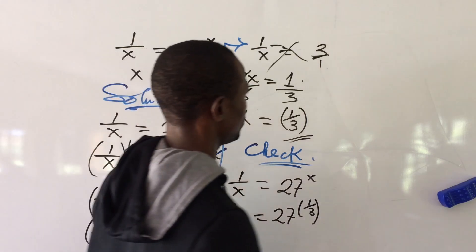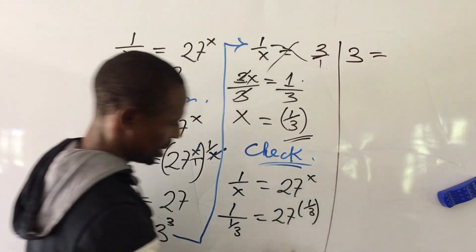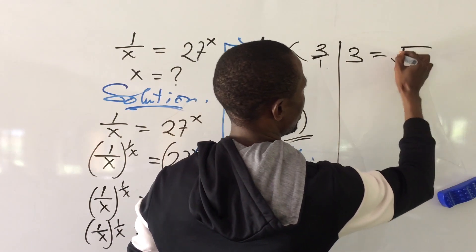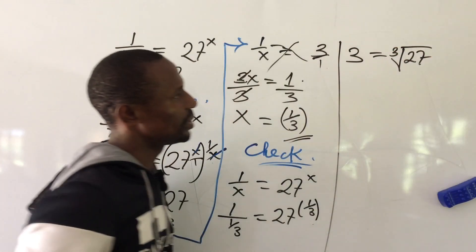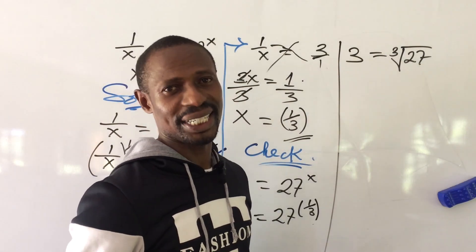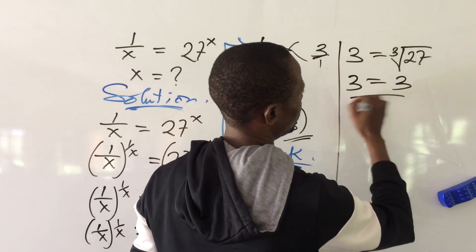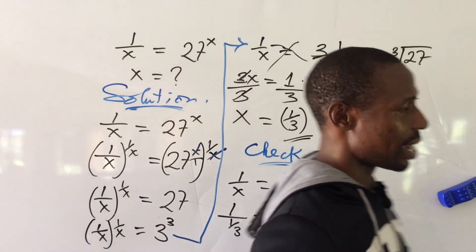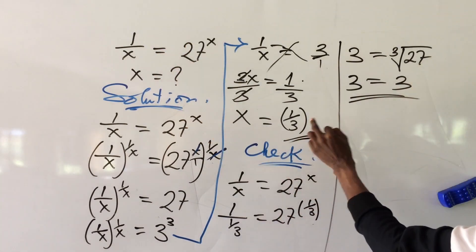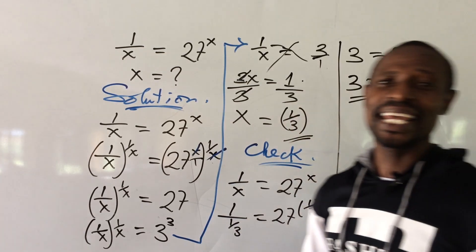If we find the reciprocal or the inverse, this will give us 3. And here being a cube root we can rewrite this - look for a number you multiply by itself three times to give you 27. Of course it is 3. So we have 3 equal to 3. This shows that the answer to our exponential equation which is 1 all over 3 is correct. This is the end of this class.